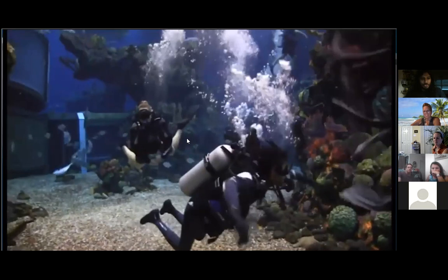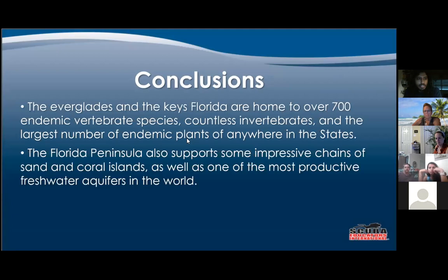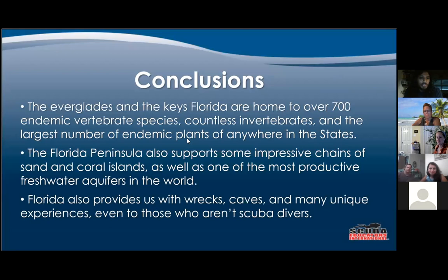I think most of you have been on the EPCOT trip. Conclusions: the Everglades and the Keys are home to over 700 endemic vertebrate species and countless invertebrates, and the largest number of endemic plants anywhere in the United States. The Florida Peninsula also supports impressive chains of sand and coral islands as well as one of the most productive freshwater aquifers in the world. It provides us with wrecks, caves, and many unique experiences even for those who aren't scuba divers.